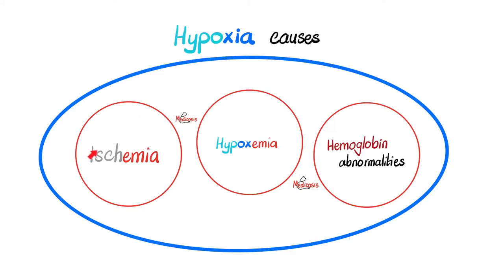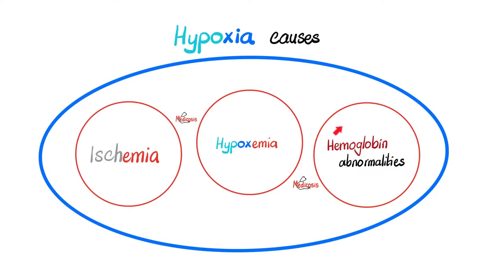One cause of ischemia could be a thrombus, an embolus, or atherosclerosis. One cause of hypoxemia could be a ventilation defect, perfusion defect, or diffusion defect. Hemoglobin abnormalities include anemia, carbon monoxide poisoning, methemoglobinemia, sulfhemoglobinemia, etc.